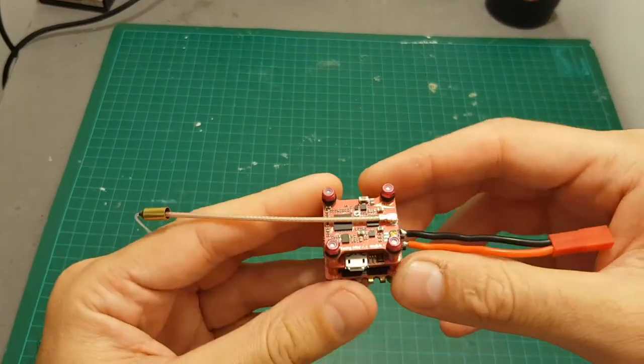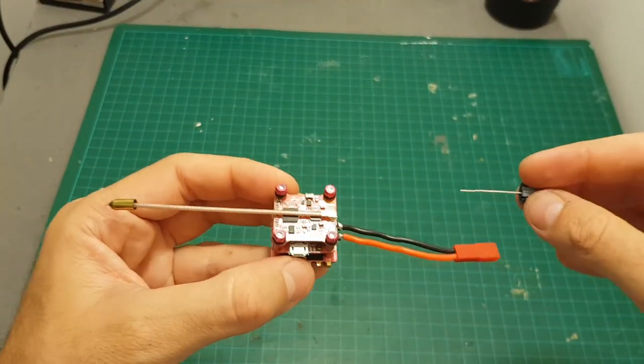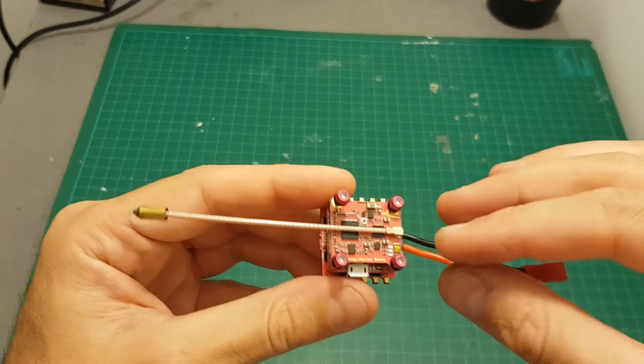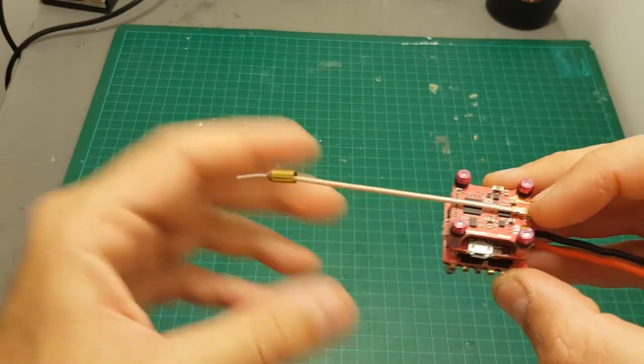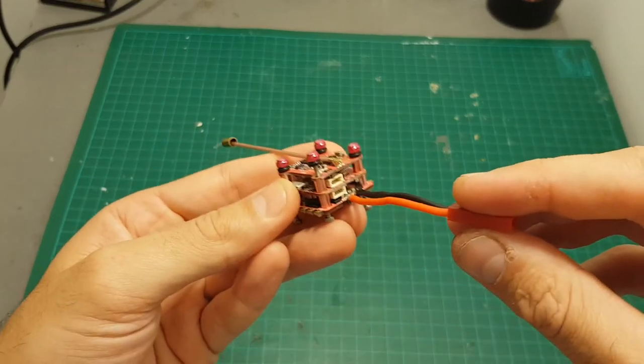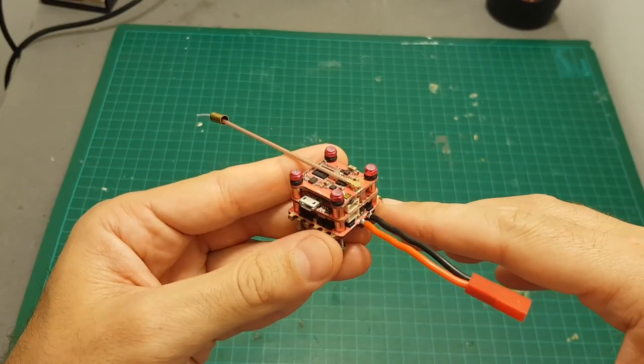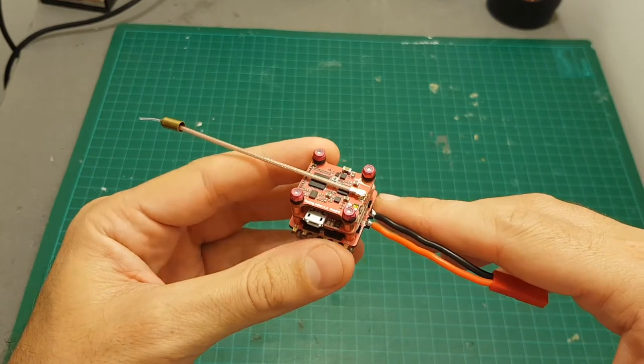So I finished connecting everything up. I've decided to solder the capacitor later when I'm going to use it for an actual build. I've also connected the IPX connector of the antenna and I soldered this JST connector in order to power it up. This flight controller supports between two to four S LiPo batteries.